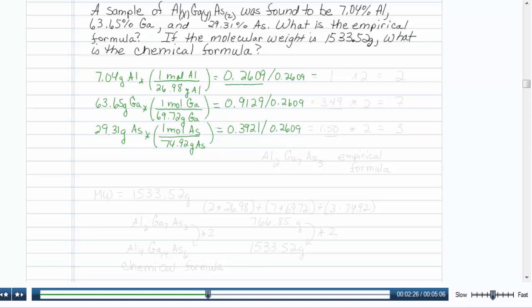This first one is obviously 1. The next one turns out to be 3.49, and this value below turns out to be 1.50. Not exactly whole numbers.